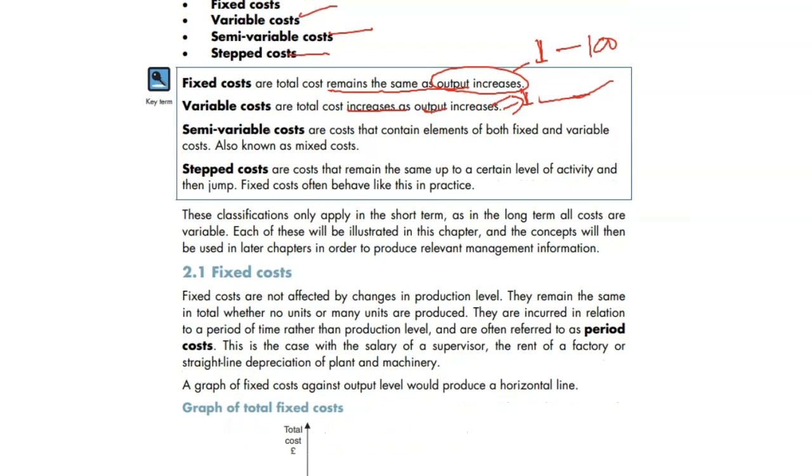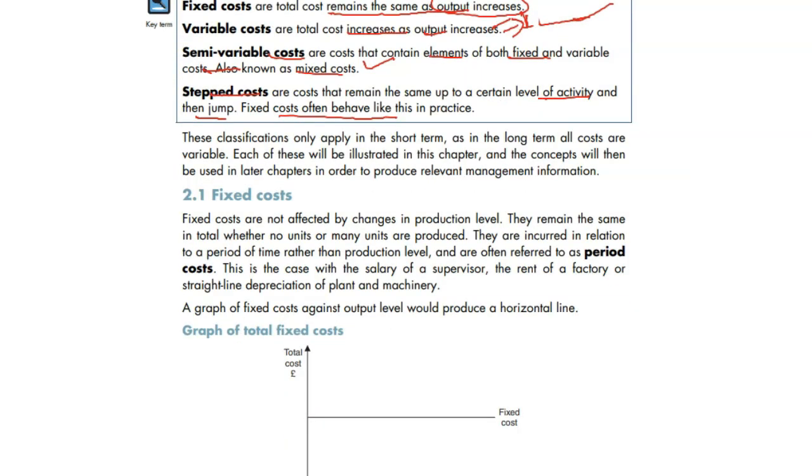Semi-variable cost is an element of both fixed and variable cost, also known as mixed cost or semi-fixed cost. Stepped cost remains fixed for a certain level of activity, then it goes up and again remains fixed.